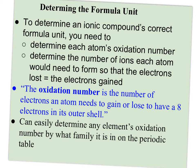And again, the oxidation number is the number of electrons an atom needs to gain or lose to have eight electrons in its outer shell. Unless it's element one through five, then two is enough. Two will do. So you can easily determine an element's oxidation number by what family it is on the periodic table because remember families tell you how many valence electrons they have.